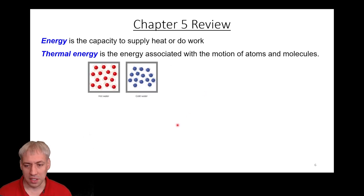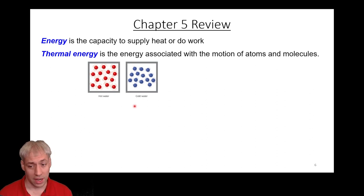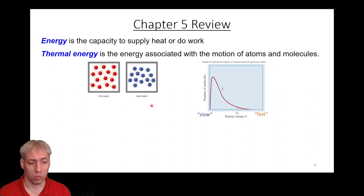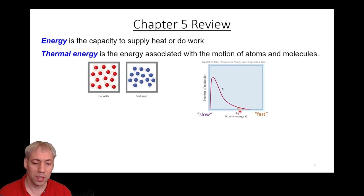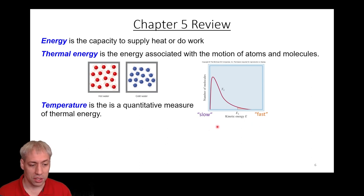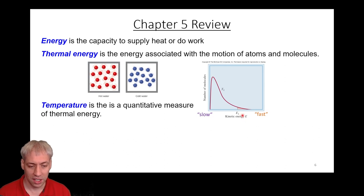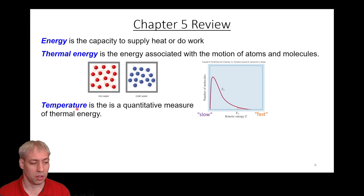We talked about this previously in reaction kinetics: hot water has molecules moving faster than cold water. We talked about the Boltzmann distribution, where we have a histogram of kinetic energy for molecules — some molecules are fast, some are slow, with a distribution in between — and a threshold for activation energy of certain processes. Temperature is the measure of this thermal energy, how fast things are going.